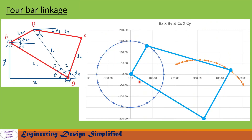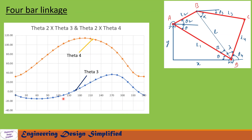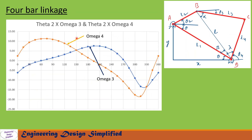Looking at the graphs: the first graph plots Bx versus By (blue circle) and Cx versus Cy (yellow arc), confirming this is a crank-rocker mechanism. The second graph plots theta2 along the horizontal from 0 to 360 degrees versus theta3 and theta4 on the vertical axis, showing the variation of the coupler and follower angles throughout the full rotation.